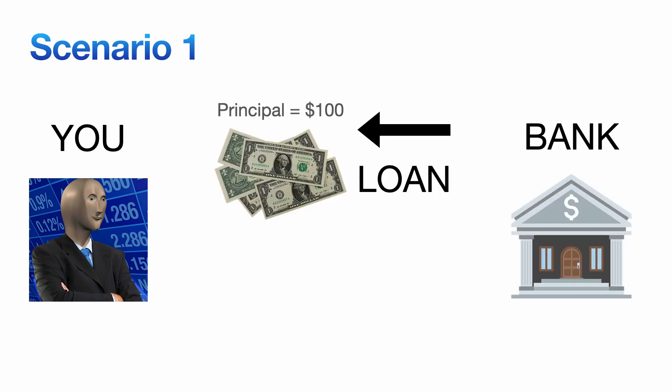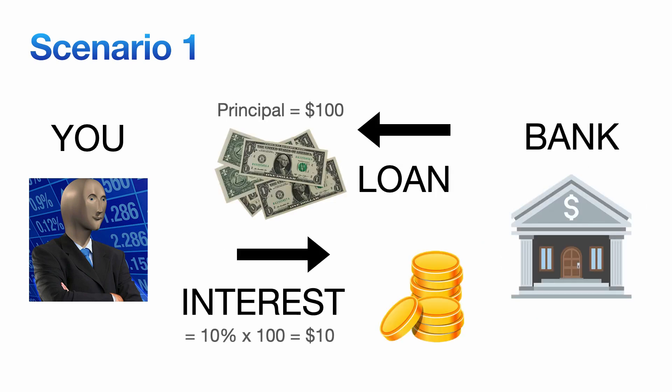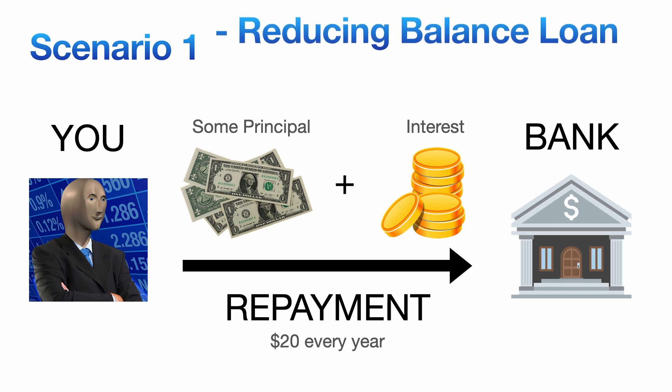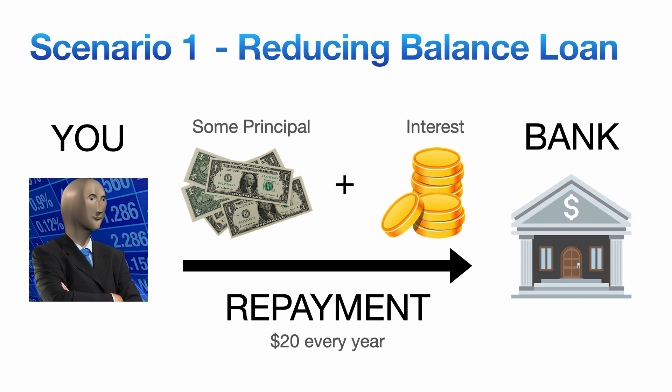Consider scenario 1, you've borrowed $100 from the bank, the bank is charging you 10% compound interest every year. You don't like that, but the bank will charge you more and more interest until you pay them back. Now you're going to make a 300 IQ play, you're going to pay back $20 every year to cover your interest and repay your debt. Some of your payment goes into paying back your principal, and some of your payment pays back the interest that you owe. This is called a reducing balance loan, because eventually you'll pay back exactly what you borrowed from the bank, as well as whatever interest the bank has charged you, one bit at a time.